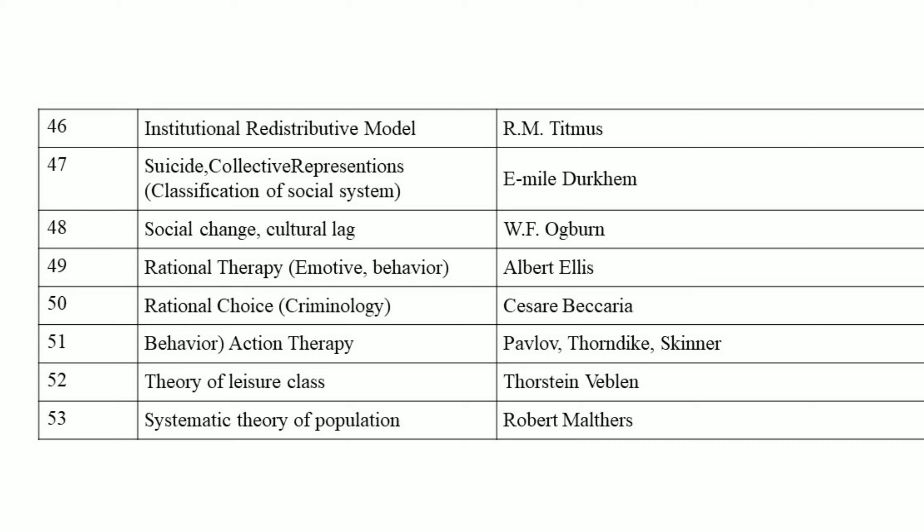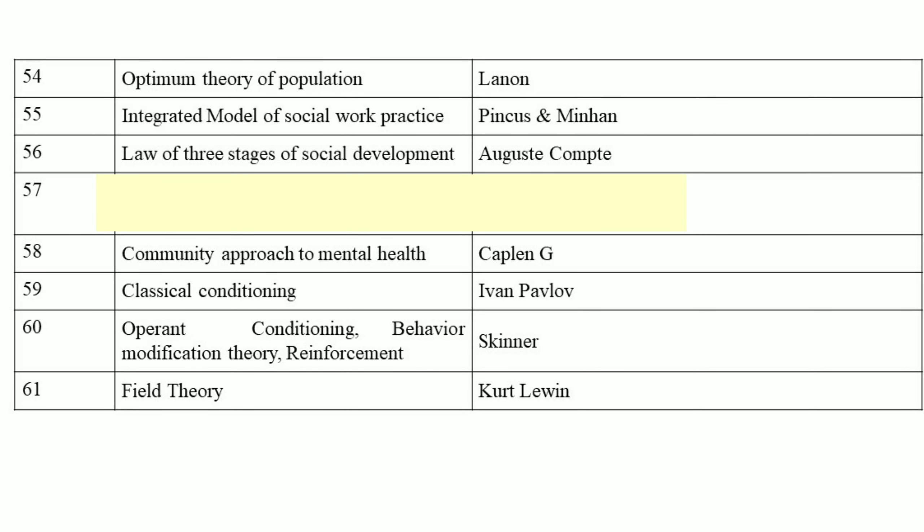Social change and culture lag — these two concepts put forward by W.F. Ogburn. Rational therapy developed by Albert Ellis. Rational choice by Cesare Beccaria. Behavior and action therapy by Thorndike and Skinner. Theory of leisure class by Thorstein Veblen. Systematic theory of population by Robert Malthus. Optimum theory of population by Cannon.